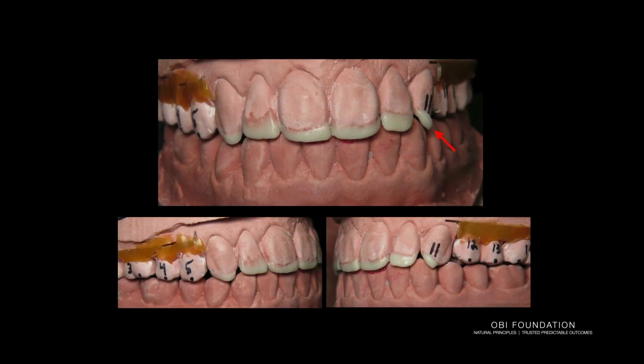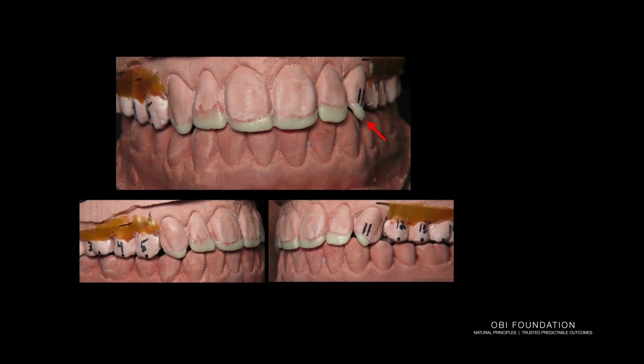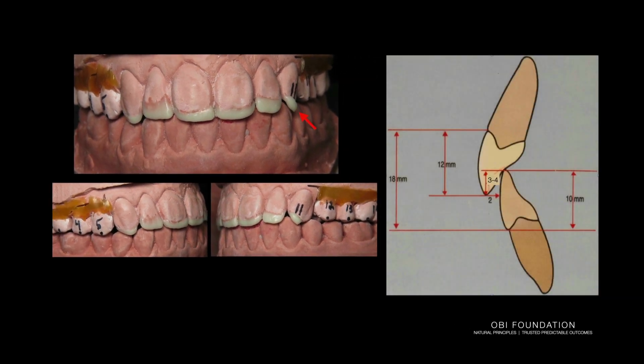We do our wax-up, and this is so critical: we need to apply these principles and we need at least three — hopefully four — millimeters of overbite and one and a half to two millimeters of overjet for proper anterior guidance and function. You can see I've projected that cusp tip on number 11 because that's where ultimately that tooth has to be placed orthodontically in order to restore it properly.